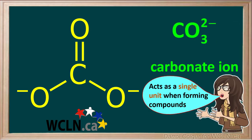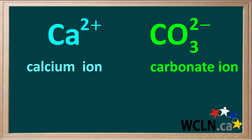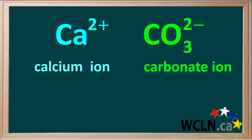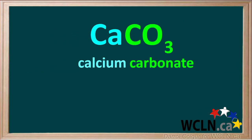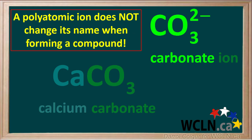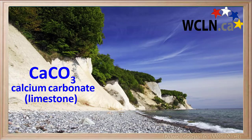A polyatomic ion acts as a single unit when forming compounds. For example, if we have a calcium ion with a positive 2 charge and a carbonate ion with a negative 2 charge, they will combine and form the compound called calcium carbonate. Notice a polyatomic ion does not change its name when forming a compound — it's called the carbonate ion, and the name of the compound is calcium carbonate. A type of rock like the rock in these cliffs is called limestone, and limestone is made up of calcium carbonate.